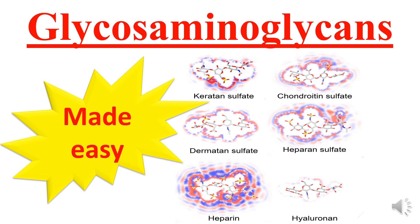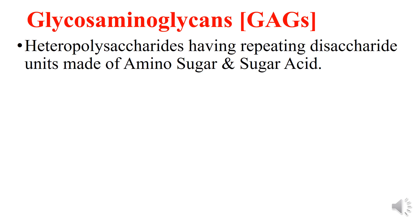Hello and welcome everyone. Today's topic is glycosaminoglycans, which are heteropolysaccharides. Glycosaminoglycans are abbreviated as GAGs. They are heteropolysaccharides having repeating disaccharide units made of an amino sugar and a sugar acid.